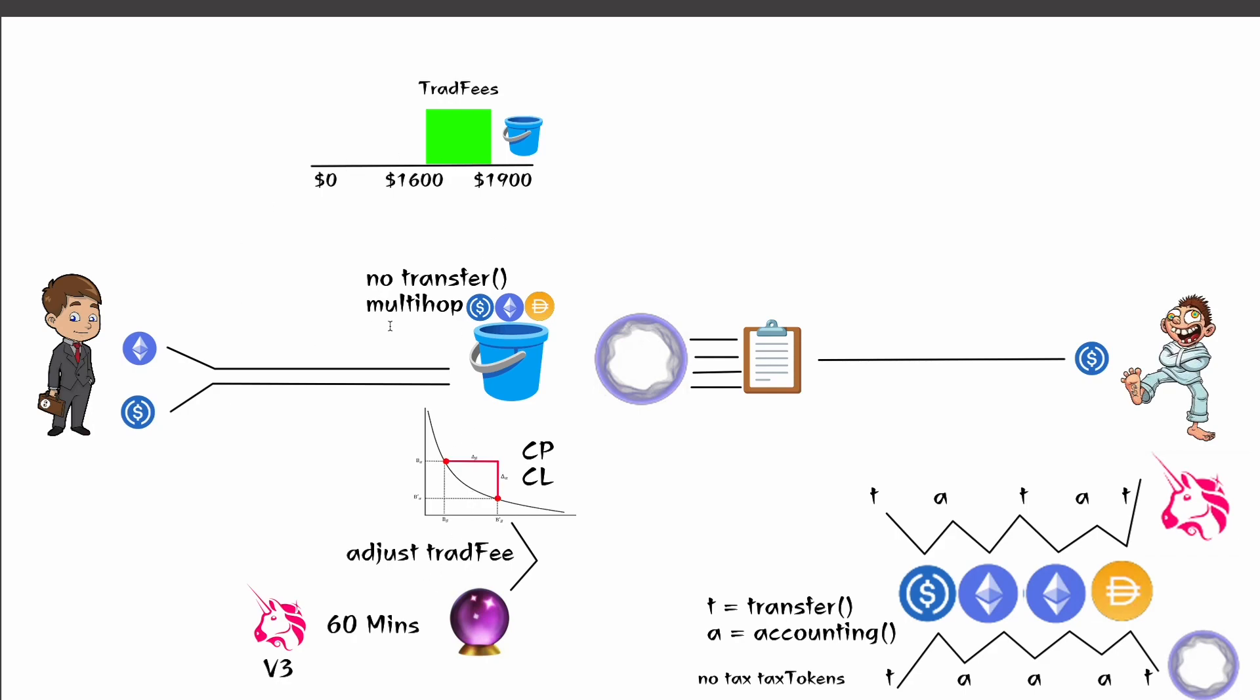Now there is something that I forgot to add here. And that is like the trading fees are auto compounding that like in Uniswap version three, they set your trading fees aside and you have to come and claim them. Whereas here, your trading fees are automatically added to your position. So your position is auto compounding those trading fees.